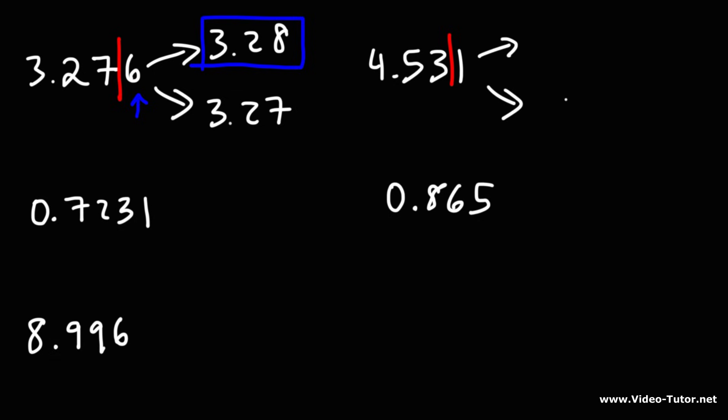So we're going to stop at the 3. We can either round it down and keep it the same at 4.53 or round it up to 4.54. Now, looking at the digit to the right, 1 is less than 5. So we need to round it down to 4.53.